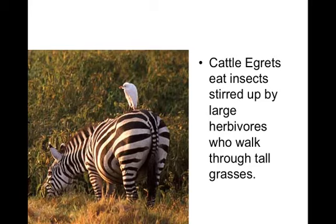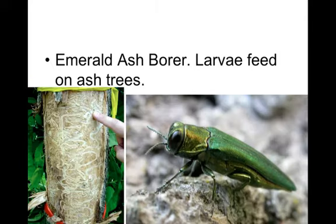Number six: the emerald ash borer — the larvae feed on ash trees. What type of symbiotic relationship could this possibly be?